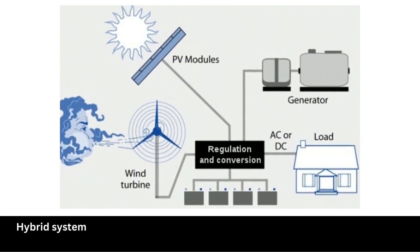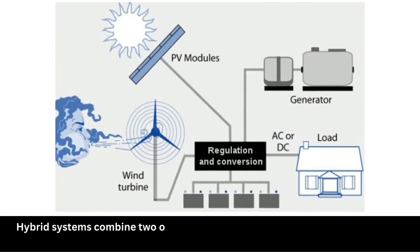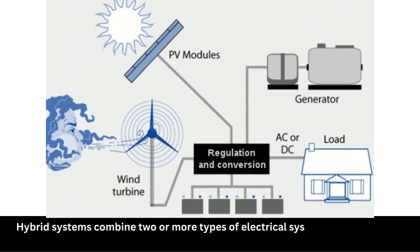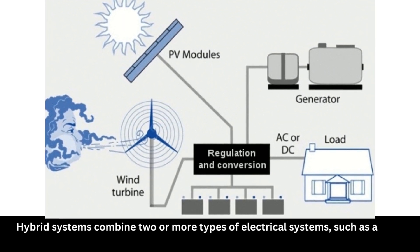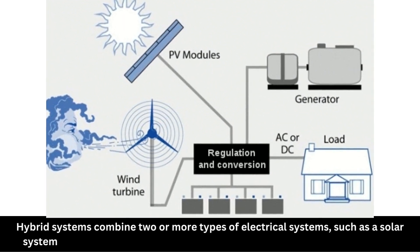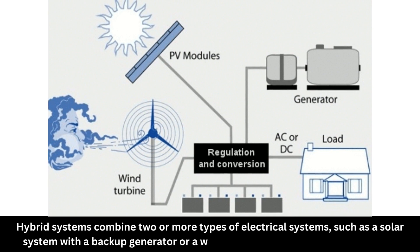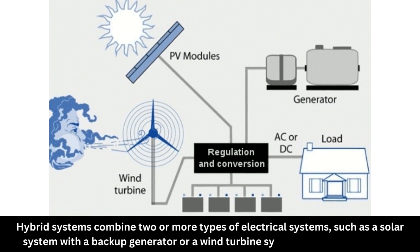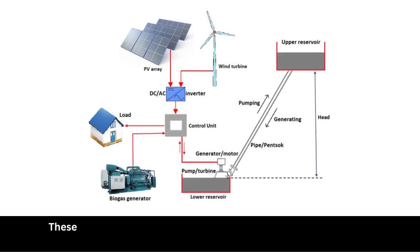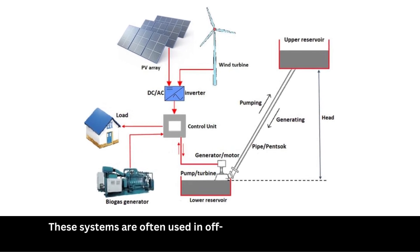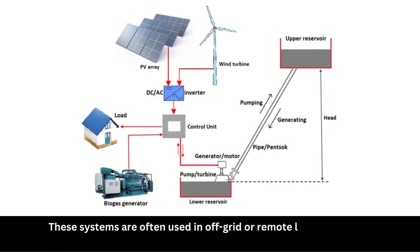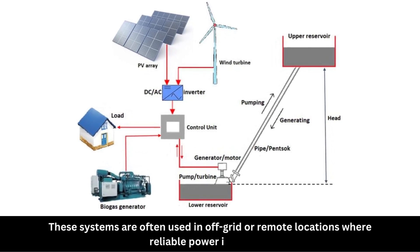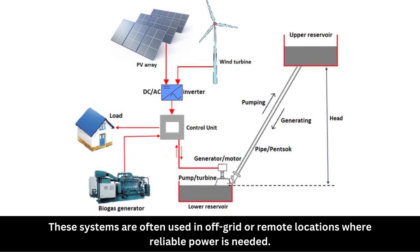Hybrid systems combine two or more types of electrical systems, such as a solar system with a backup generator or a wind turbine system with a battery bank. These systems are often used in off-grid or remote locations where reliable power is needed.